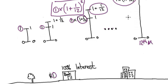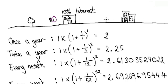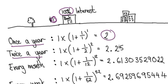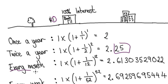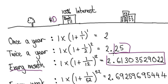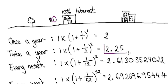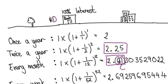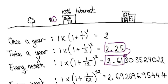Let me summarize. If you put $1 into a bank giving 100% interest: compounding once a year gives you $2; compounding twice a year gives you slightly more; compounding every month — 12 times a year — gives you even more. Notice you are getting slightly more money each time you compound more frequently.